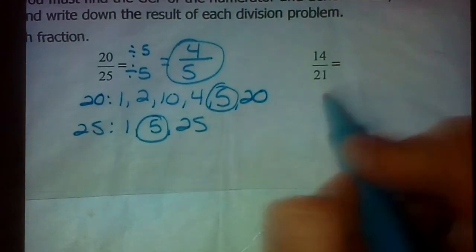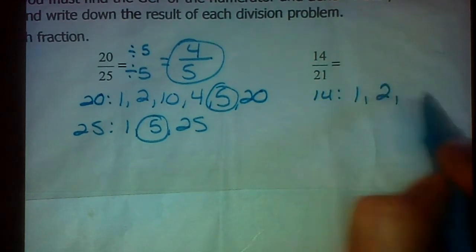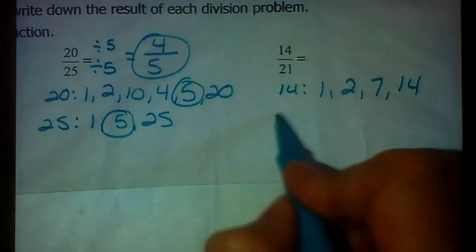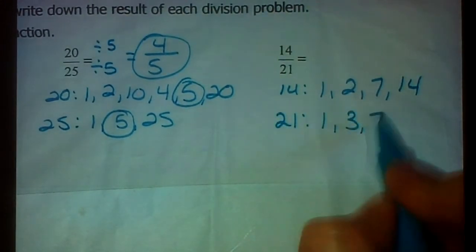How about 14 over 21? Factors of 14: 1, 2, 7, 14. Factors of 21: 1, 3, 7, 21.